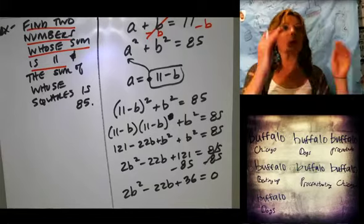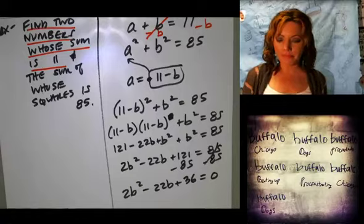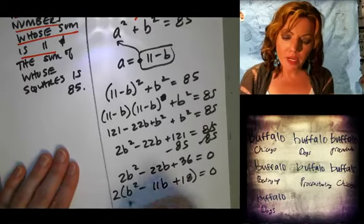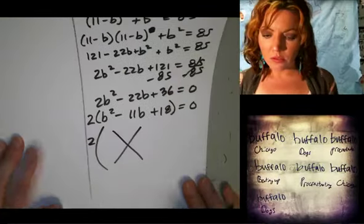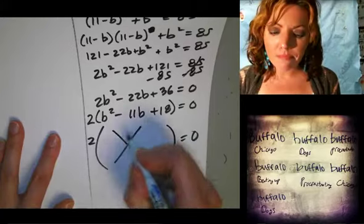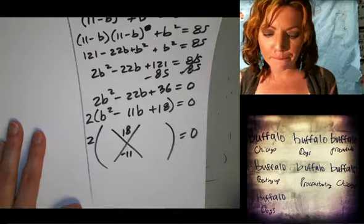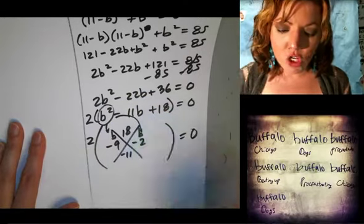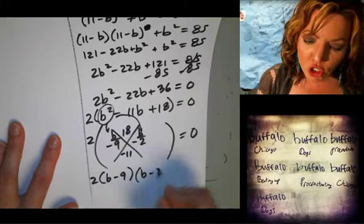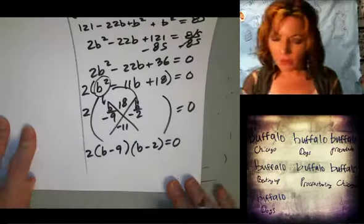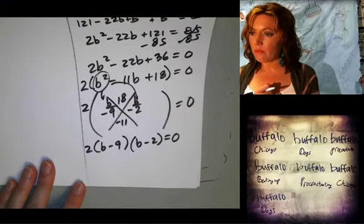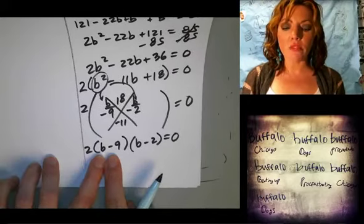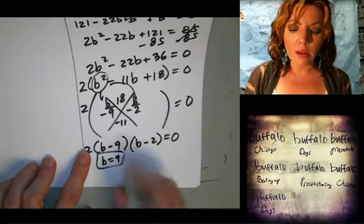2B squared minus 22B plus 36 equals zero. Can anything be factored out before we do any other manipulation here? Akashini? Good. Let's factor out a 2. Now if we use this method, what goes in the top? 18. Bottom? 11. Two numbers that multiply to positive 18 add up to negative 11. Negative 9, negative 2. Then we distribute the Bs. So we get 2 times B minus 9 times B minus 2 equals zero. So B equals what or what? If I solve it with this one, B equals how much? Nine. How about this? B could equal 2 as well.